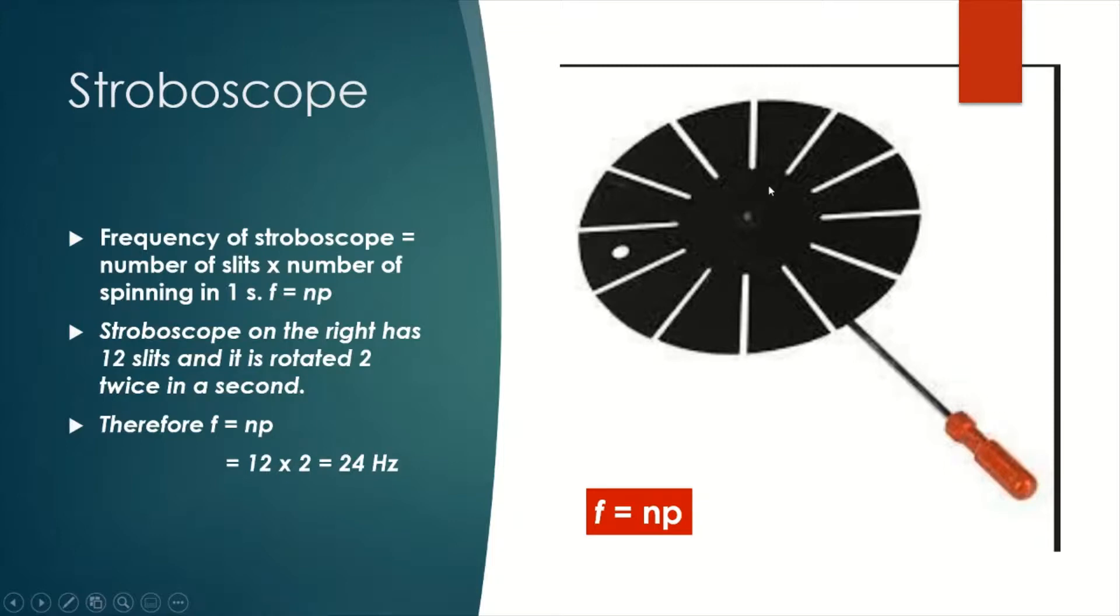For example, in this stroboscope, there are 12 slits, and we spin it two times in one second. Therefore, the frequency of the stroboscope is 24 hertz.